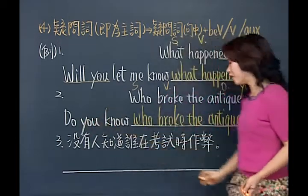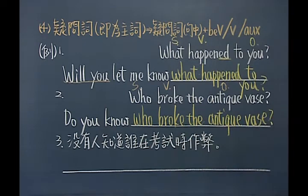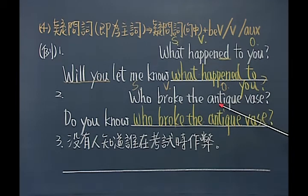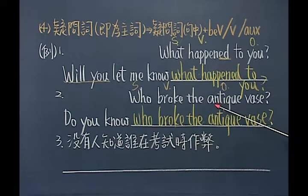很明显这个疑问词本身就是主词，既然他本身就是主词，还是一样拿下来，后面主词后面跟动词，直接照抄。前面是Do you know，主要子句是问句句型，后面用问号：Do you know who broke the antique vase？你如果知道就直接讲：Mary did、Helen did——谁打破了就直接把他说出来。